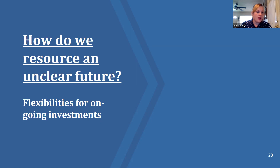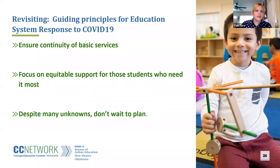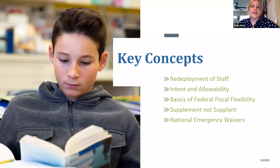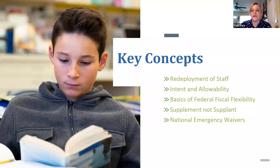So how do we resource an unclear future? Here we're going to talk about flexibilities in other federal funding streams that you're already familiar with. We are still talking about the same three guiding principles: continuity of basic services, equitable support, and planning. The key concepts in this section are redeployment of staff, intent and allowability of those title funds, the basics of federal fiscal flexibility, supplement not supplant, and some national emergency waivers.